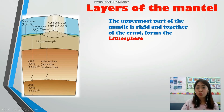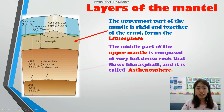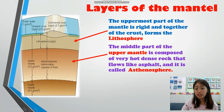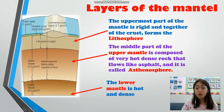The uppermost part of the mantle is rigid, and together forms the lithosphere. The middle part of the upper mantle is composed of very hot, dense rock that flows like asphalt, and it is called the asthenosphere. The lower mantle is hot and dense.